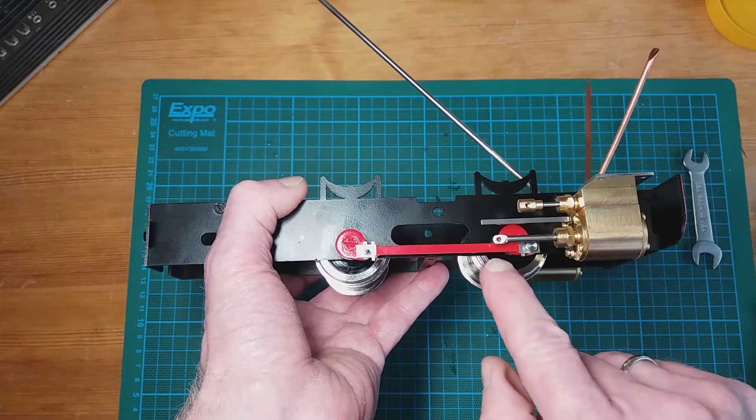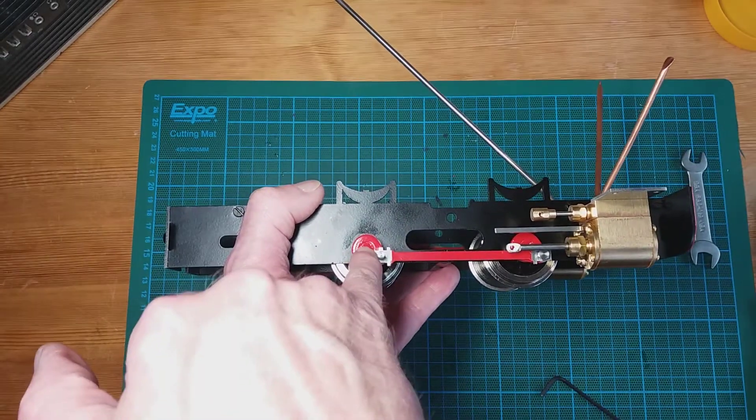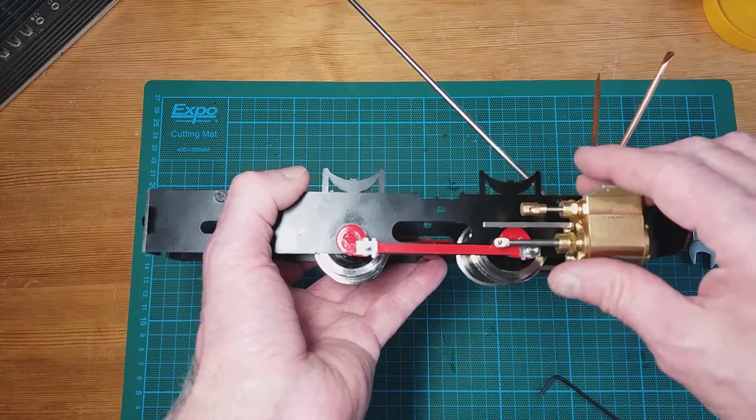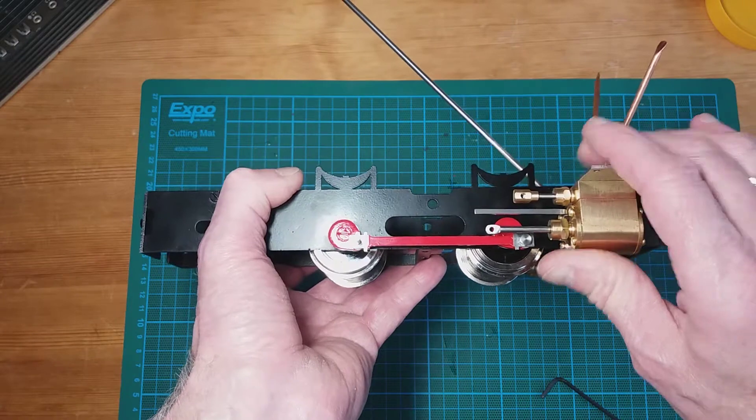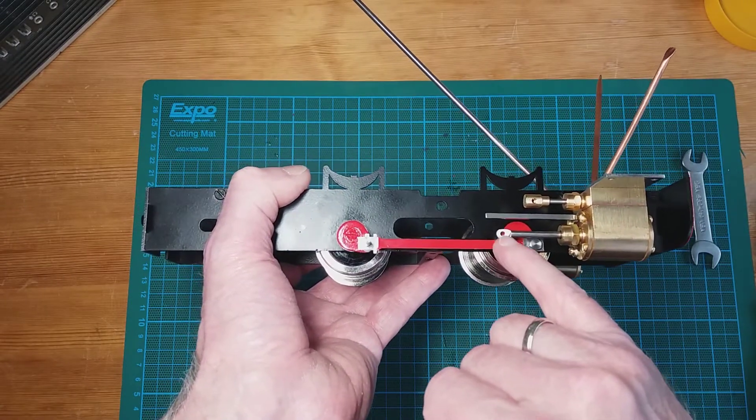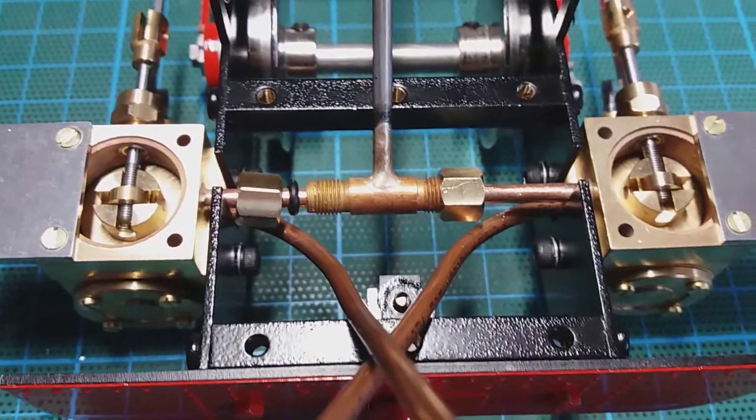Actually it's not in line, it's pointing downwards. It needs to be in line with the central point of the axle. If I put it like that, it's now just about in line with the centerline of the axle, so I'm going to tighten it up there.